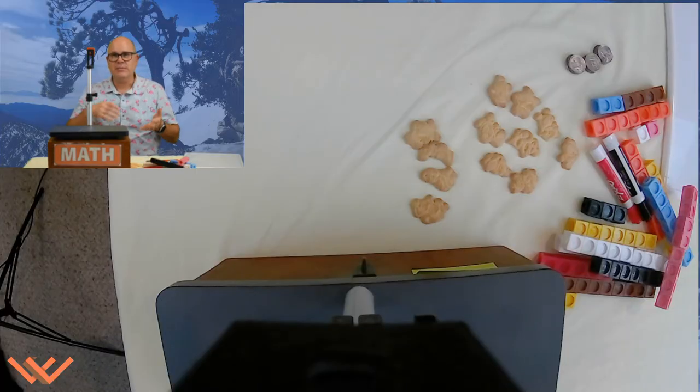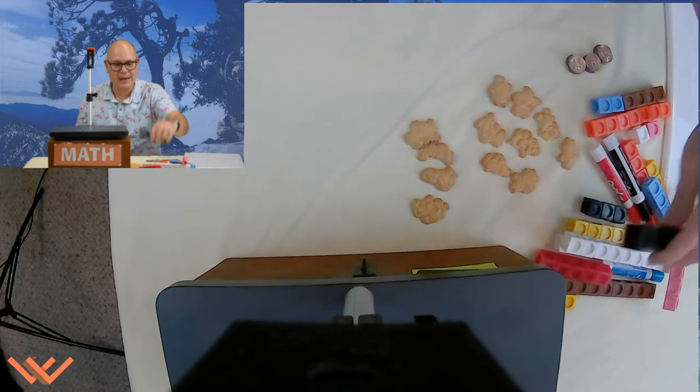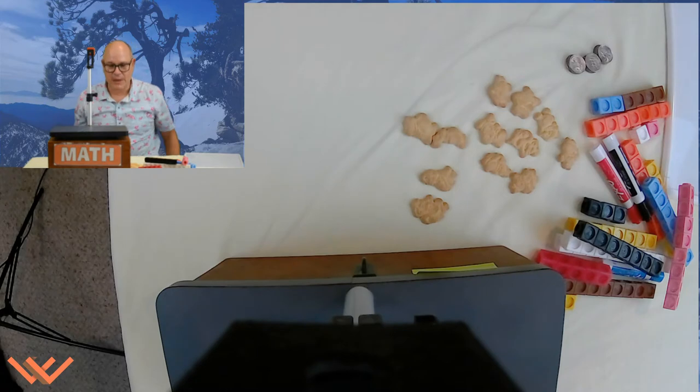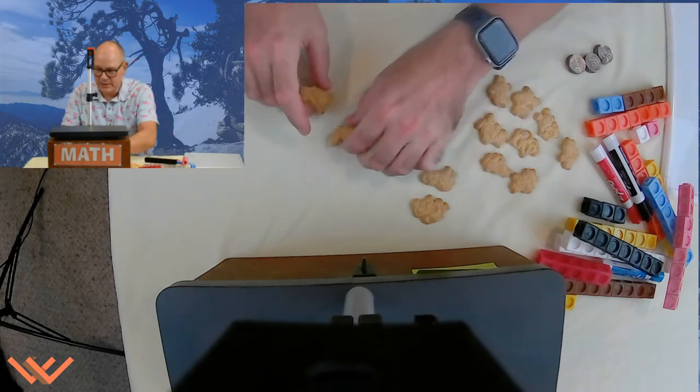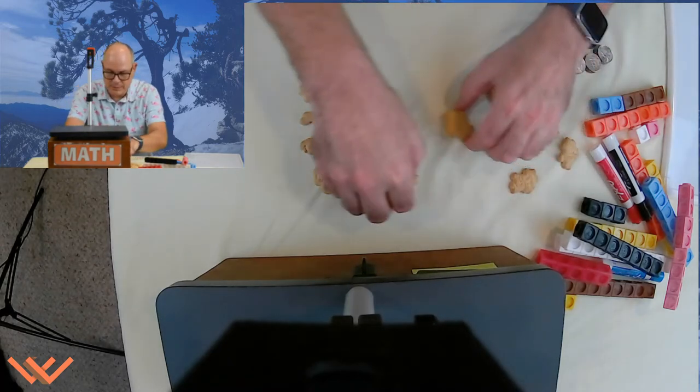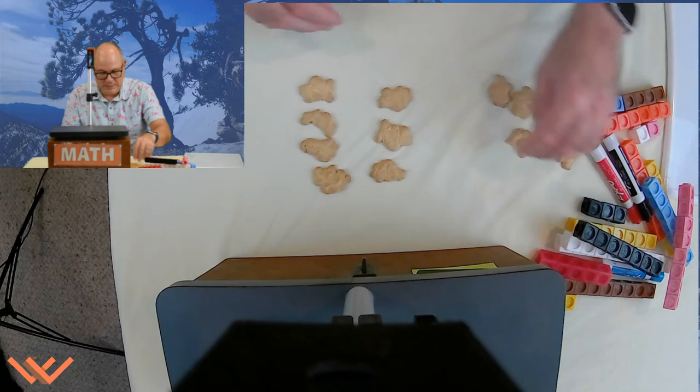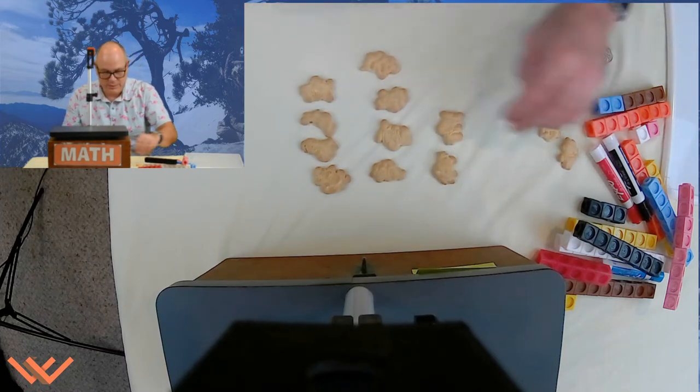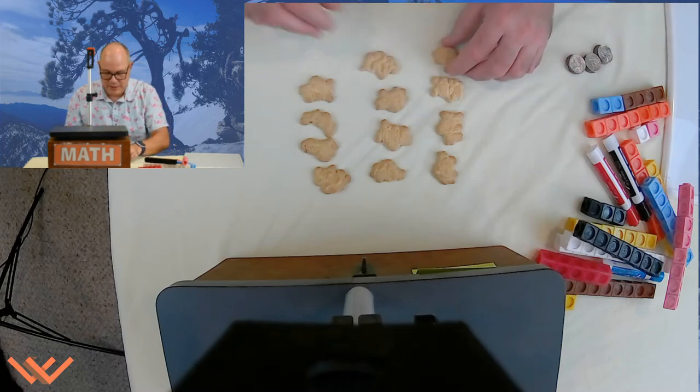So first thing I want to do is I'm going to use some manipulatives. And remember, you don't have to just use blocks. I'm using animal crackers. Look at that. So I'm going to work with three groups of four. Let's take a look at this. So I have one group of four. Oh, these look yummy. I mean, sorry. Two groups of four. And then here we go. Here's three groups of four.